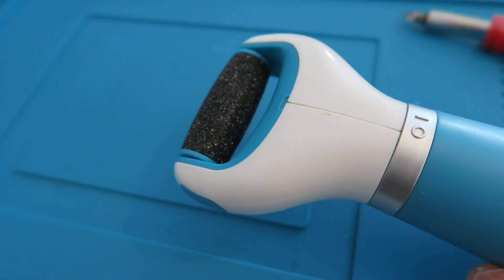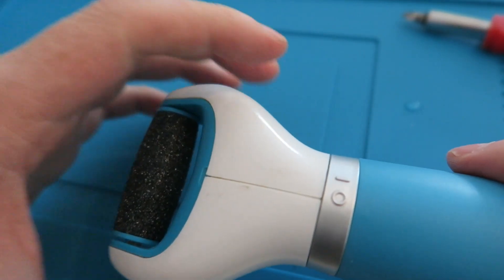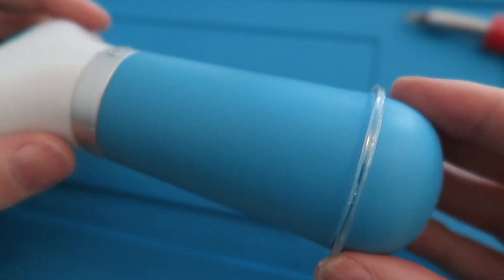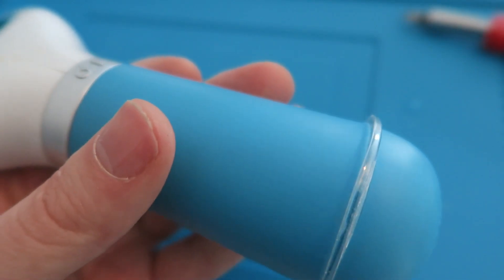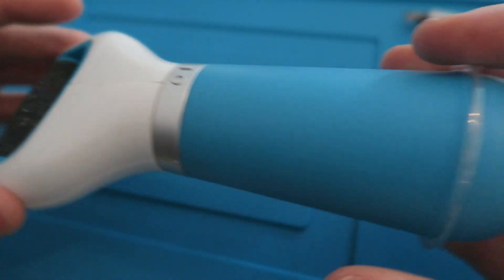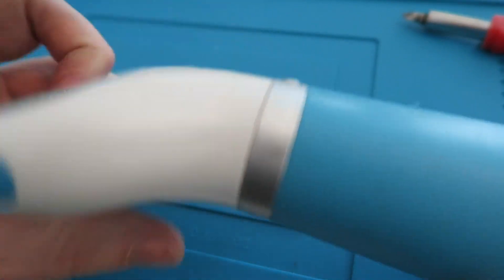There you go. So that is how you clear battery corrosion from just about anything. Neutralize it, and then try and clean it up as much as you can so the battery can make a good contact again.